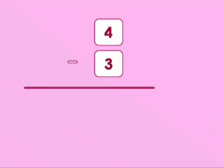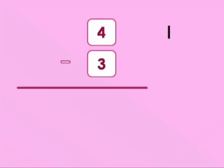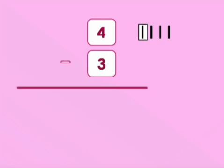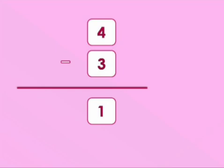Our question is 4 minus 3. We will draw 4 lines: 1, 2, 3, 4. As we have to subtract 3 from 4, we will mark 3 lines and remove them: 1, 2, 3. After removing, how many lines are left? 1. So 4 minus 3 equals 1.